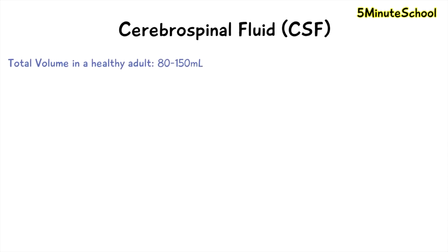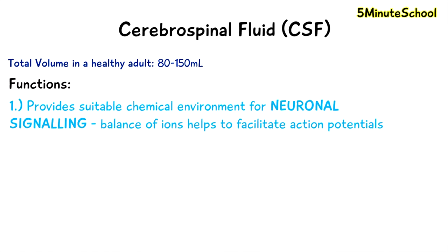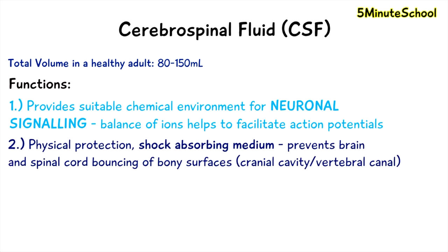The total volume of cerebrospinal fluid in a healthy adult is between 80 to 150 millilitres. There are three main functions of cerebrospinal fluid, and the first one is to provide a suitable chemical environment for neuronal signaling. The balance of positive and negatively charged ions helps with the production of action potentials and postsynaptic potentials.